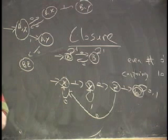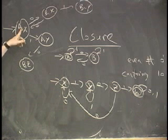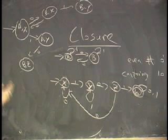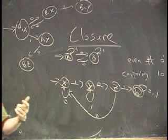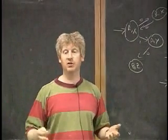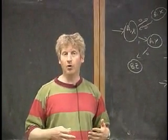We just did that now. That's deterministic, right. Well, we showed that if you have two machines for A and B, you can do the union. Oh, is there any way to do intersection non-deterministically? Only indirectly.